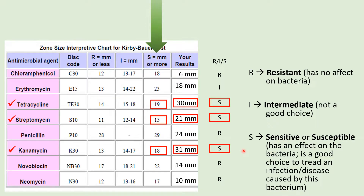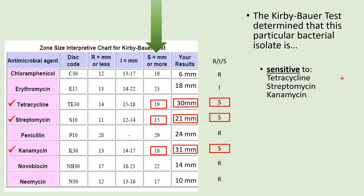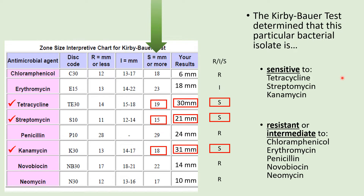In summary, the Kirby-Bauer test determines if a bacterial isolate is sensitive to a drug. In this case, the bacterial isolate infecting the patient was sensitive to tetracycline, streptomycin, and kanamycin — any one of these drugs can be used to treat the patient. The isolate was resistant or intermediately resistant to the other drugs, which would not be used for treatment. That concludes the video on the Kirby-Bauer test.